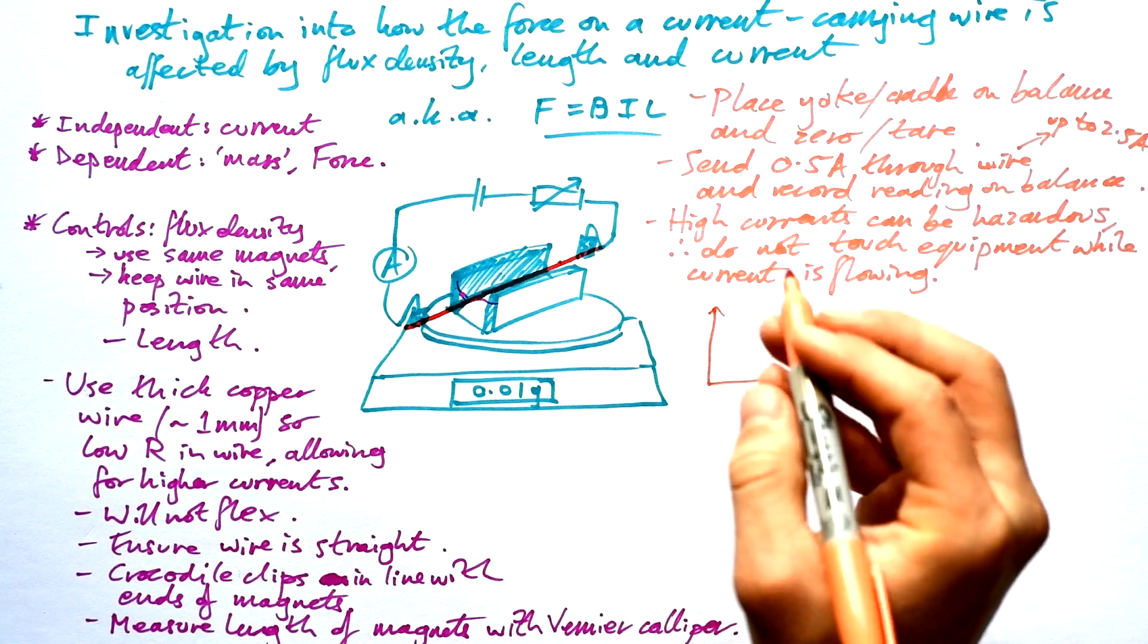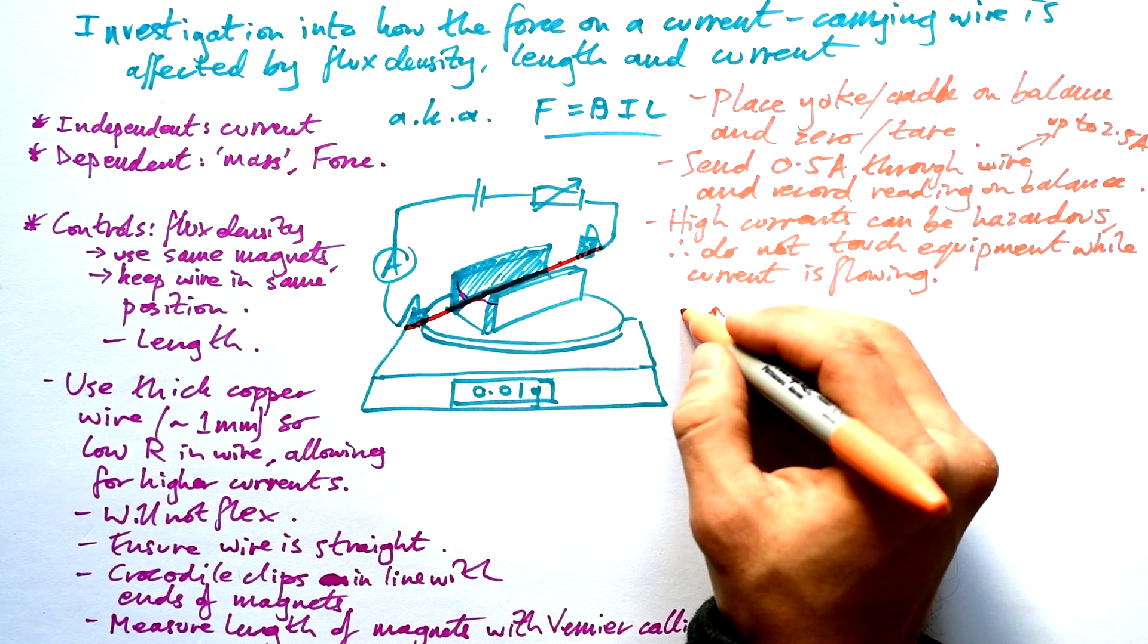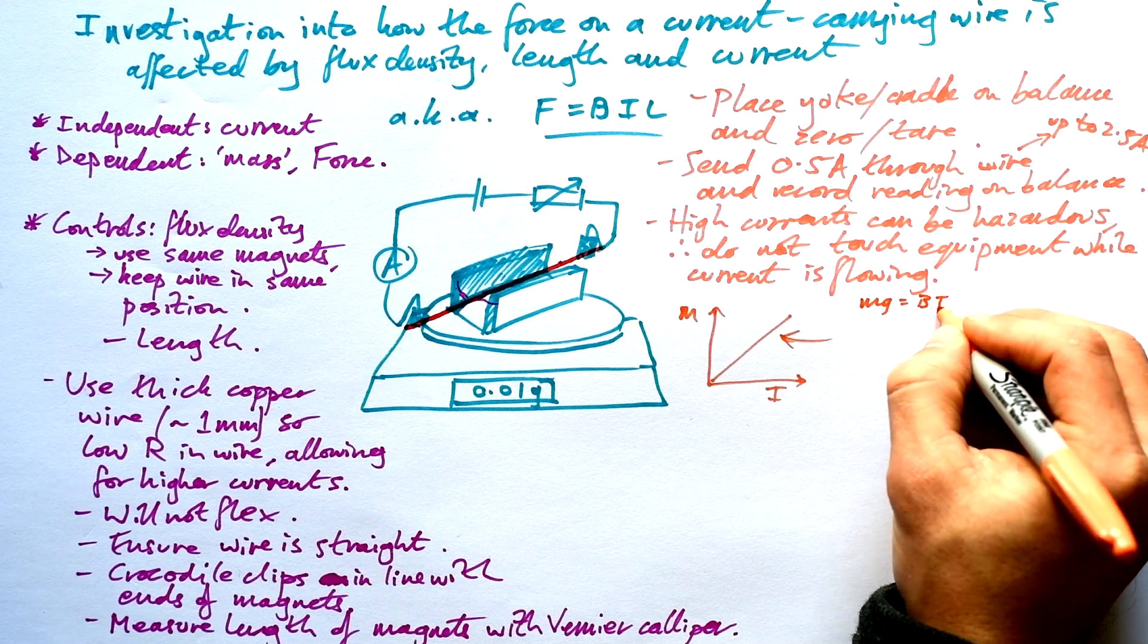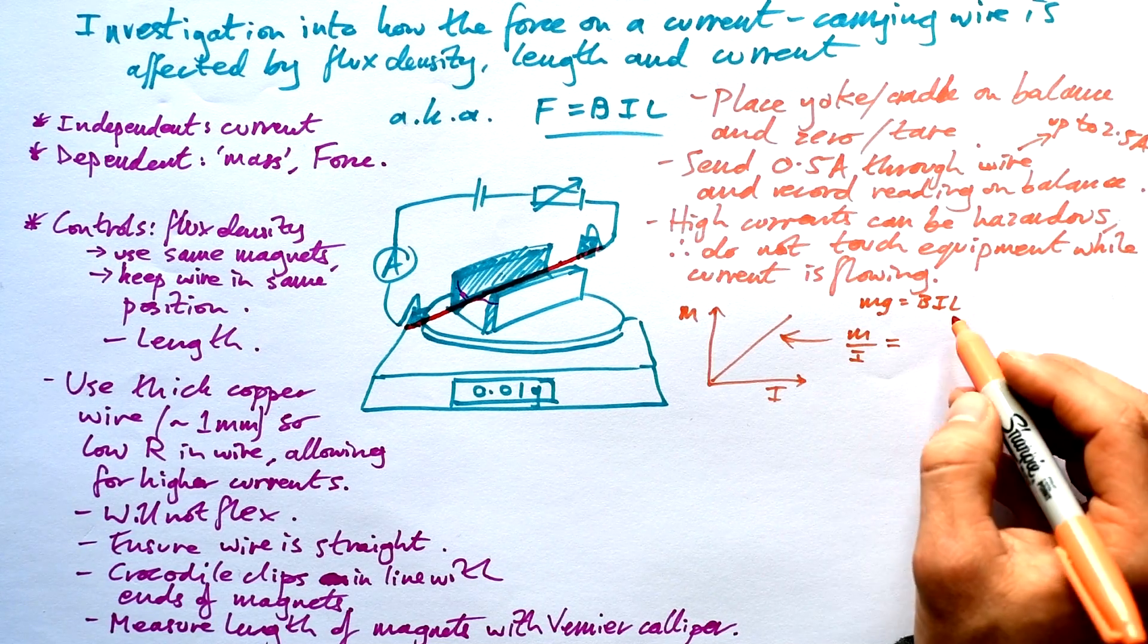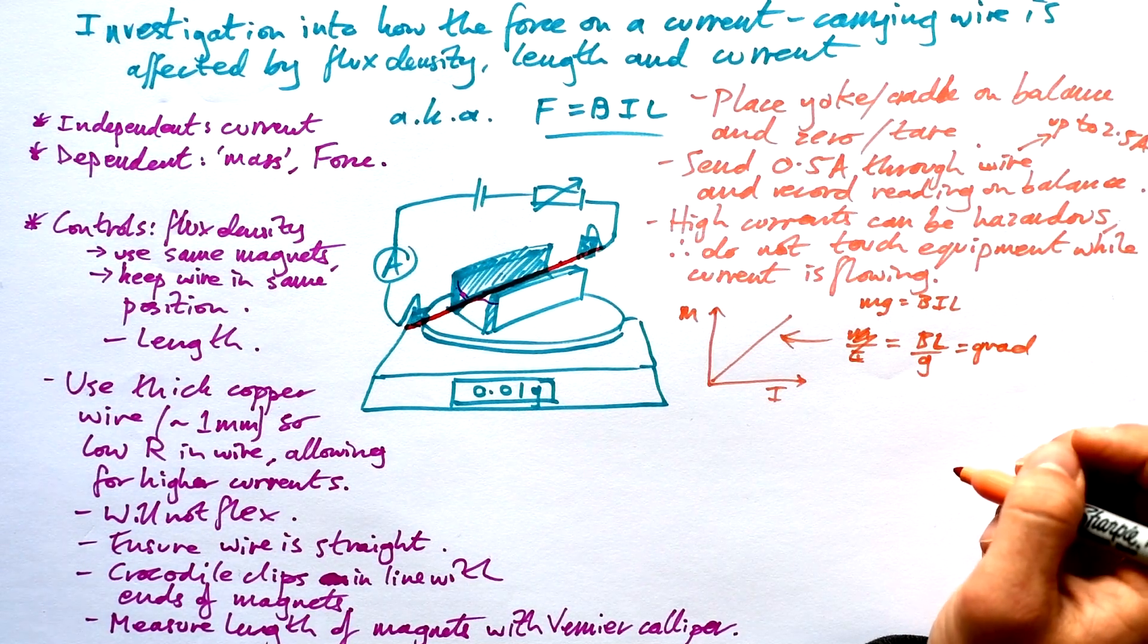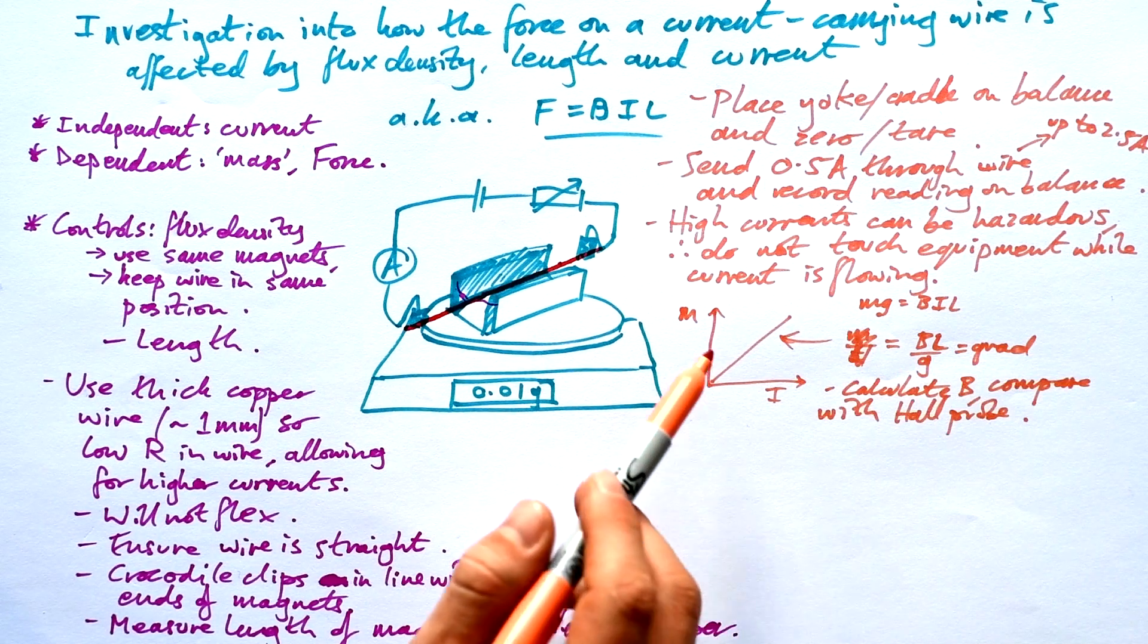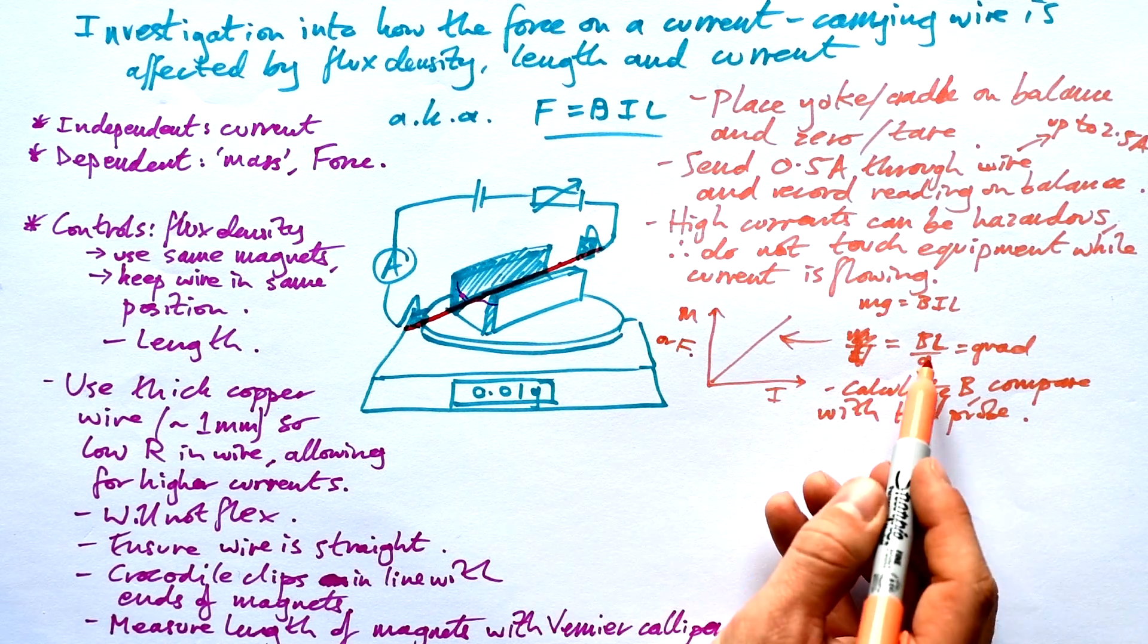So we're then going to draw a graph and you could put force against current but as per usual because force is calculated from mg here we can just put m against i and we get a nice straight line. So if mg is BIL then that means that m divided by i which is our gradient is going to be equal to BL over g and from that we can actually calculate a value for the flux density in between our magnets and you can check it with a hall probe if you want to. If this was an exam though you'd probably have force on here instead so just be aware of that.